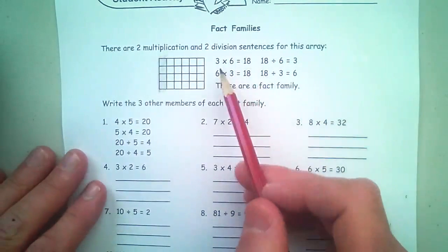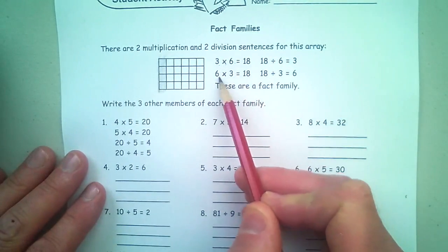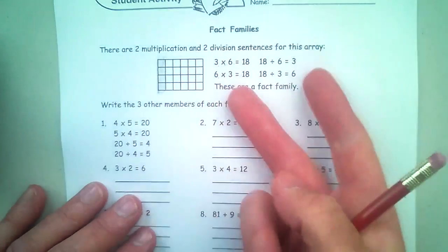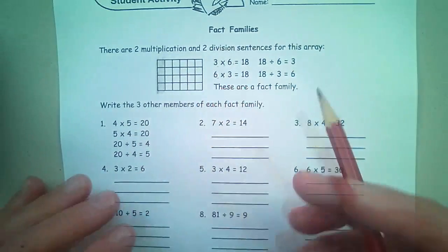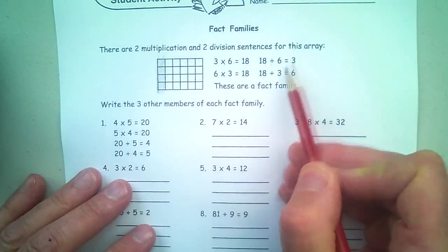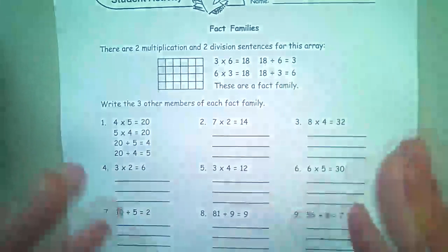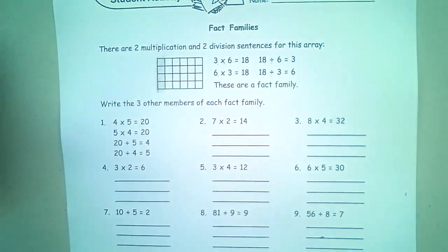So here we can see 3 times 6 equals 18, 6 times 3 is 18, so we already know that, the commutative property. And then we have 18 divided by 6 equals 3, 18 divided by 3 equals 6. So you can almost start to see, once you know your times tables so well, you can see two numbers and bang, you can almost see it.